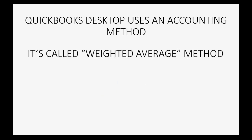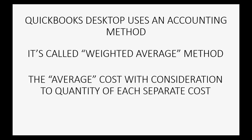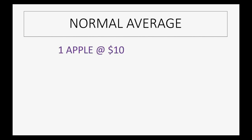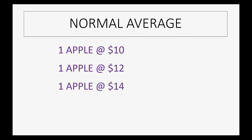QuickBooks Desktop uses a special accounting method called the weighted average method — it's the average of all the different costs you paid for the item, with consideration to quantity after each step. Let's first discuss what a normal average is. Imagine one apple for ten dollars, one for twelve dollars, and one for fourteen dollars. You paid a total of thirty-six dollars for those three apples, so the normal average cost would be twelve dollars, which you could then use as cost of goods sold.